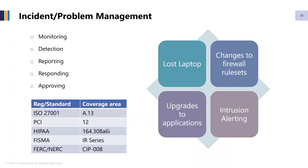The incident and problem management process is another aspect of continuous compliance. The difference between incident management and problem management, at a 50,000-foot level, is really frequency. Every ticket, every disposition individually can be called an incident. However, when you take a step back and look at a whole bunch of incidents holistically over a period of a month or a quarter and identify discrete projects that will help solve those types of incidents, that's called problem management. So there's incident management, which is very discrete, and then there's problem management, which is looking at a bunch of discrete incidents and running a project to solve it holistically.